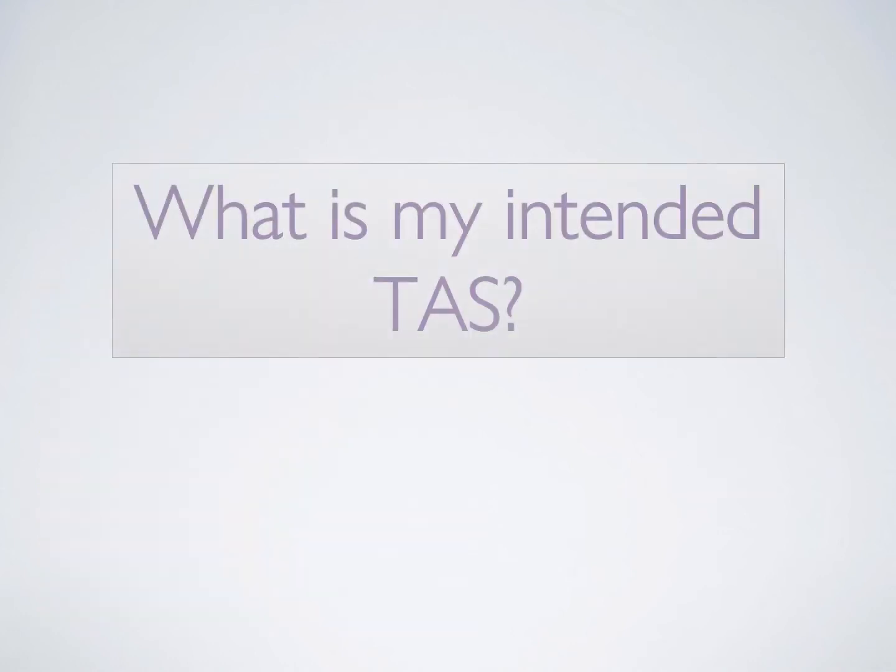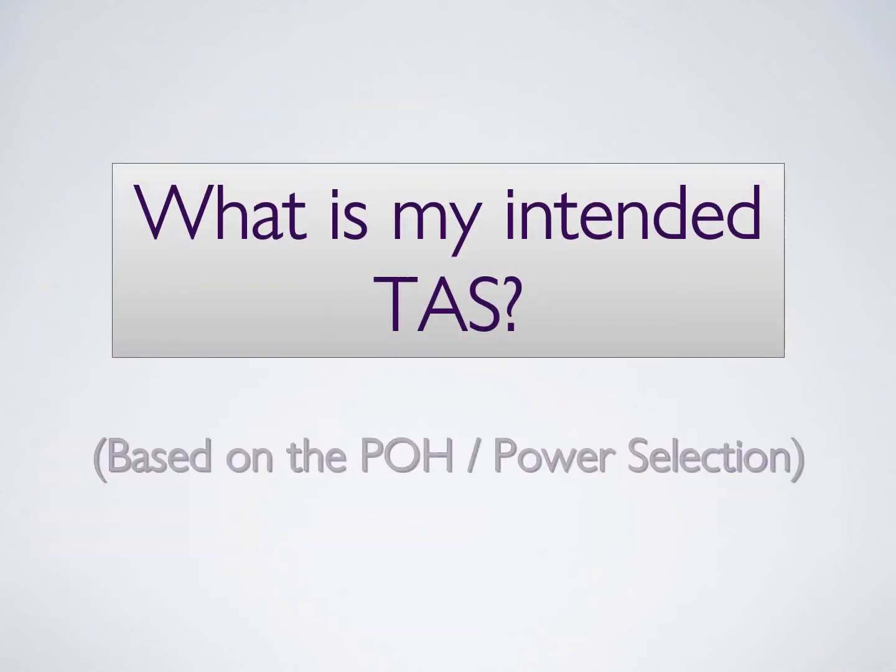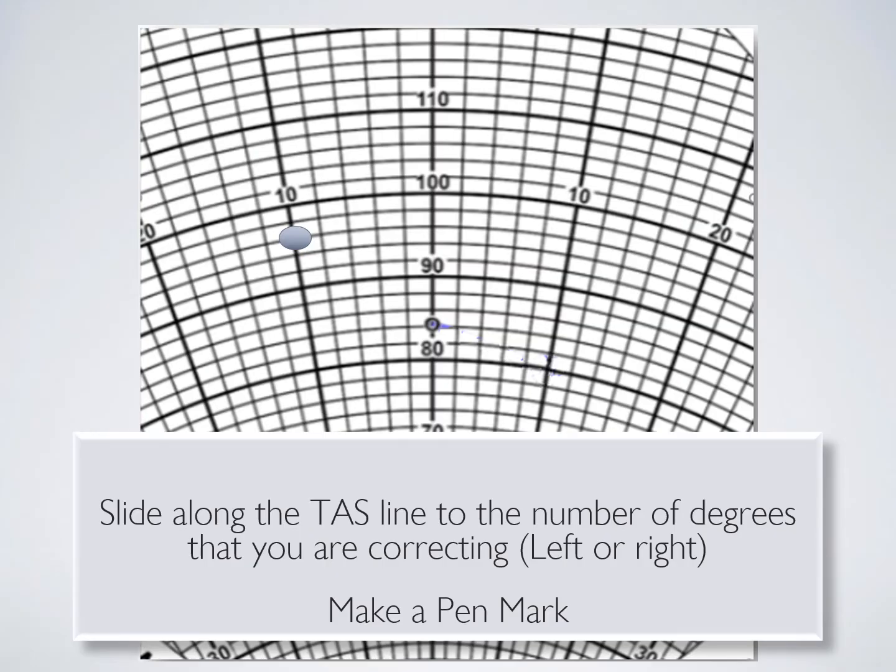Lastly, you'll want to know what your true airspeed is expected for the conditions of the day and your power setting. So let's say my true airspeed for this aircraft is 95 knots and my correction is to the left 10 degrees. So where those two lines intersect, I would make a pen mark.